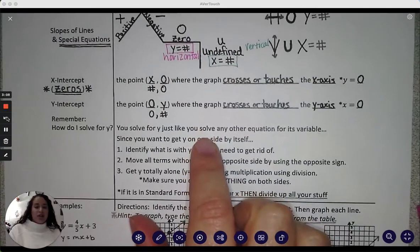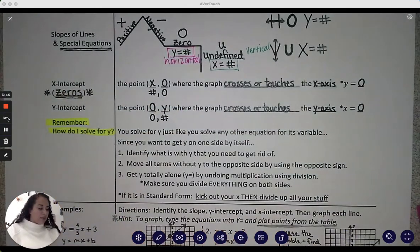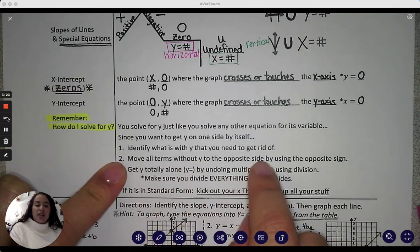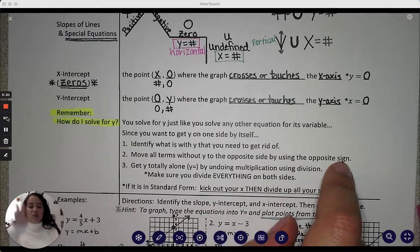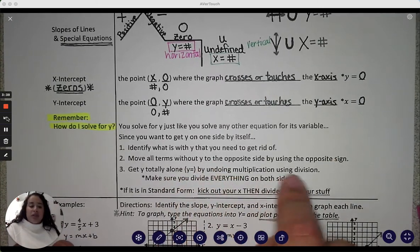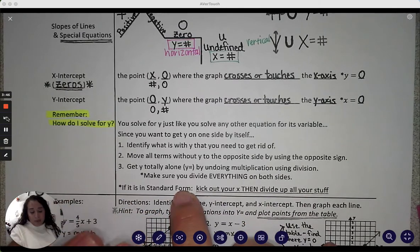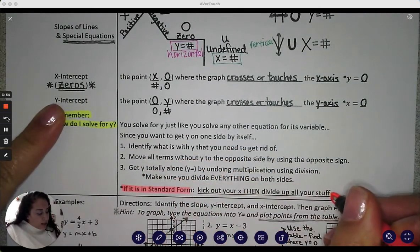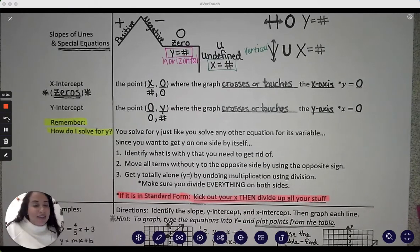So it's important to remember how to go from standard form to slope-intercept form. So remember here are some steps. How do you solve for y? Identify what is with y that you need to get rid of. Move all your terms without y to the opposite side by using the opposite sign. So if it's positive, we subtract it because they're opposites. If it's negative, we add it because they're opposites. Get y totally alone by undoing multiplication using division. So that means we divide everything on both sides. And just as a reminder, if it's in standard form, this is, to me, the easiest way to remember how to get from standard form to slope-intercept. If it's in standard form, kick out your x and divide up your stuff. Kick up your x, divide up your stuff.